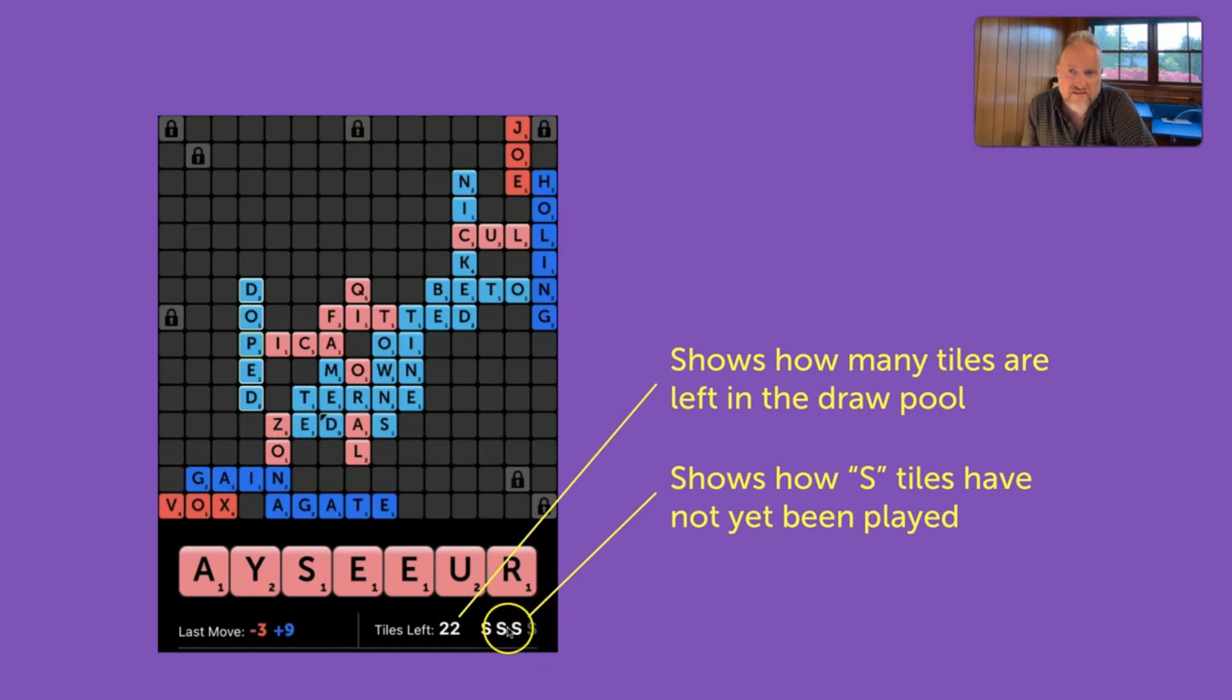This shows how many S's have yet to be played. The white ones have not been played. The grayed out one has been played, and that would be this one right here. And this shows how many tiles remain in the draw pool.